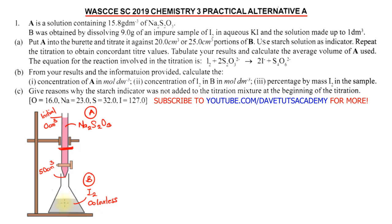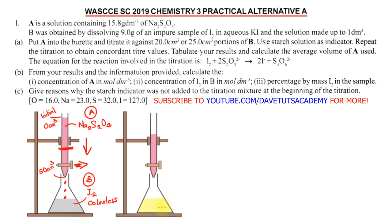The solution in the conical flask is colorless. We are not going to add the indicator at the beginning of the titration. As we release sodium thiosulfate into the iodine solution by opening the burette valve, droplets of sodium thiosulfate fall into the iodine solution. We need to note the color change — the first thing we will notice is that the solution turns yellow. When the solution turns yellow, this is not the completion of the titration; it is the indication that we can now add the starch solution.